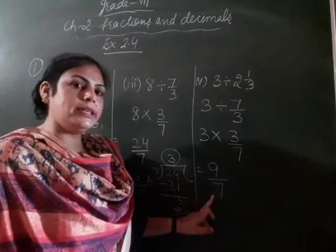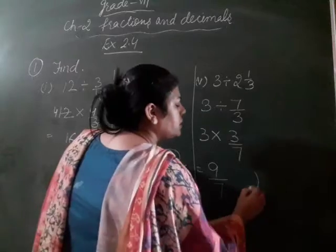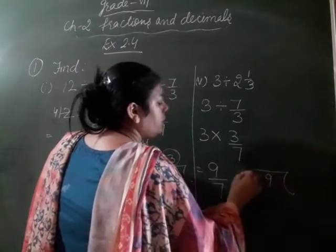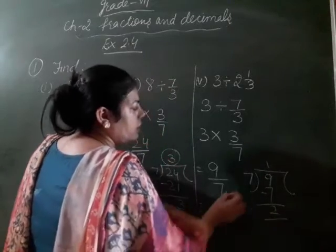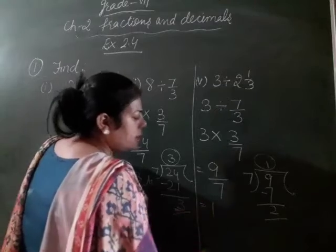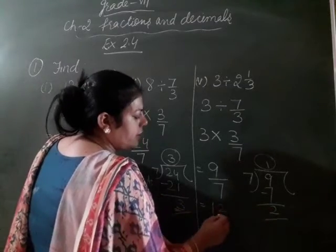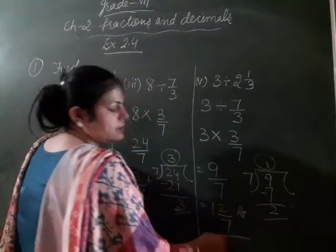Your numerator is greater than denominator. So what we do? We write in the mixed fraction. 9 divided by 7. 7 ones are 7. 9 minus 7, that is 2. Write your whole number, quotient as whole number, remainder as numerator and your divisor as denominator. This is your answer. Clear?